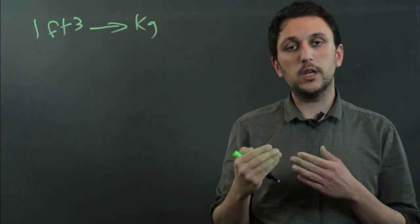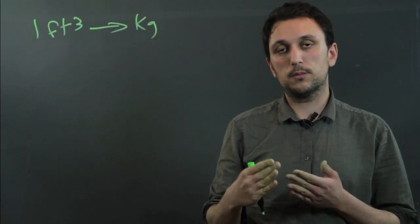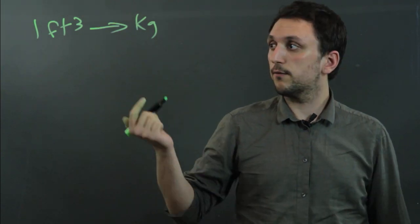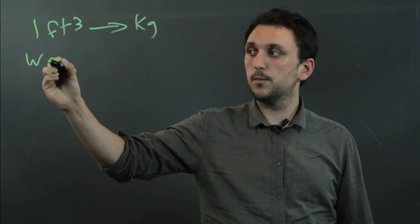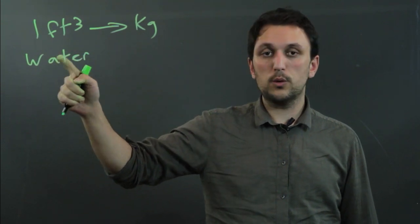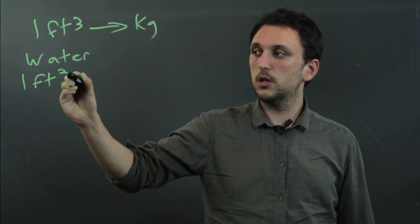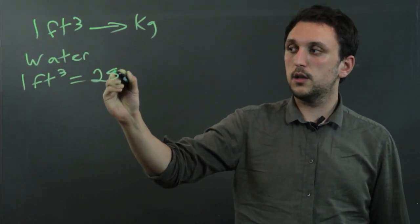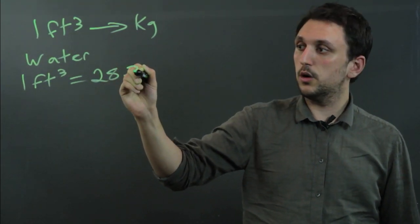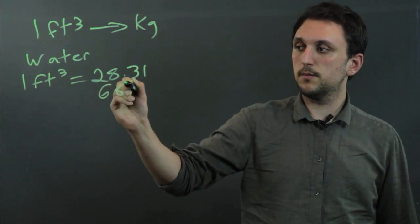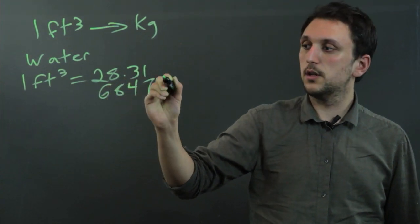The only way we can do that is if we know the mass of the substance we're converting. So, for example, with water, where we know the density, we can say one cubic foot equals 28.316847 kilograms.